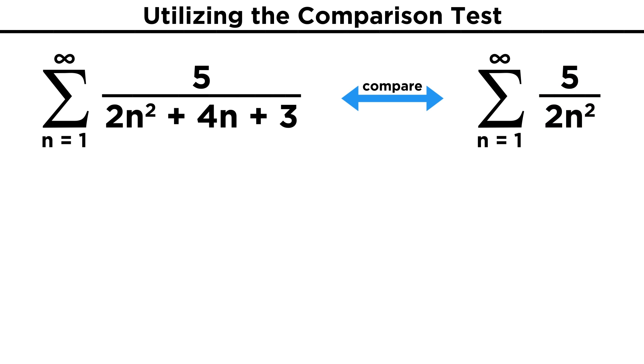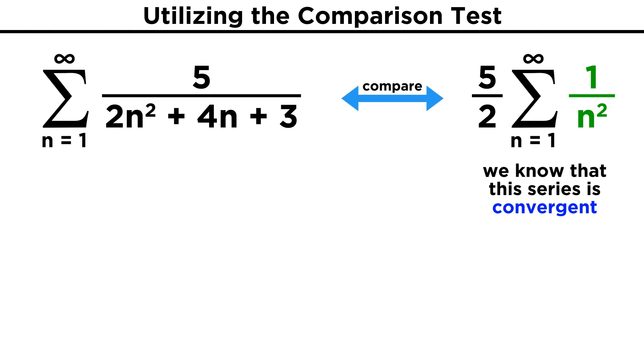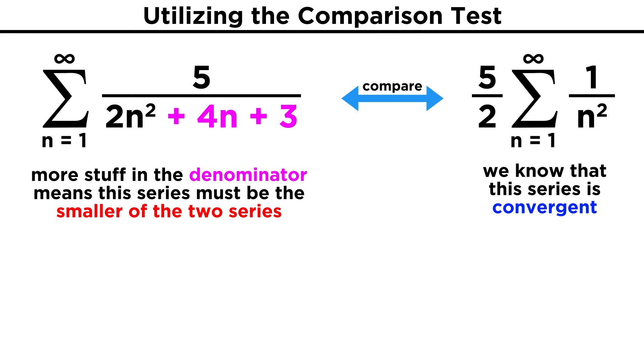Well, we can manipulate series just like we do integrals, and five halves is a constant that can be pulled outside of the sum, as doing this is essentially like factoring five halves out of all the infinite terms in the series. Then we are left with something very familiar, and we know that this series is convergent. Our original series has terms that must be smaller than the terms in this series, because there is more in the denominator, and n is always positive, so the fraction is always smaller than if those terms weren't there.